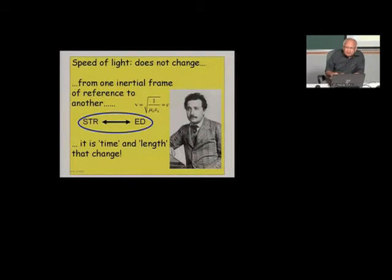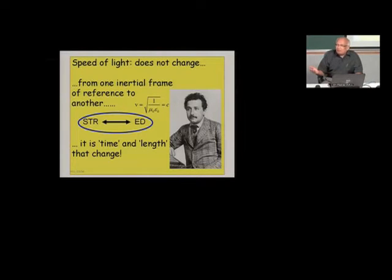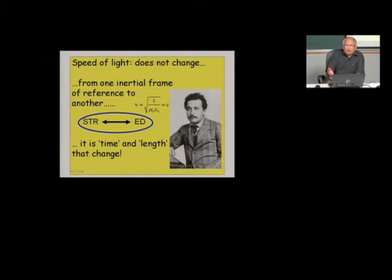There is often a belief that quantum mechanics is important for tiny microscopic objects, and relativity is important for those objects which are moving at relativistic speeds — like 0.6 or 0.8 times the speed of light. Now both of these notions are incorrect, because quantum mechanics is applicable to everything no matter what the size is. When we introduced quantum mechanics, we never referred to the size, volume, or mass of the object, and therefore quantum mechanics is applicable to everything.